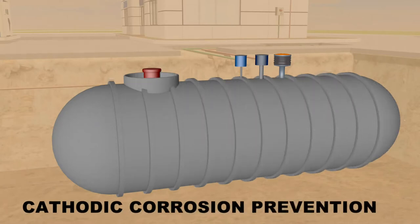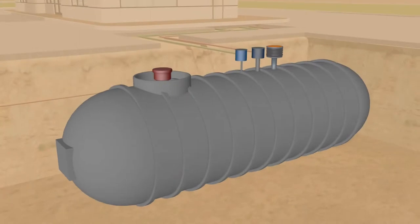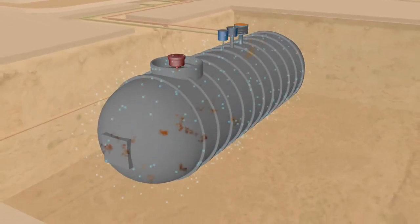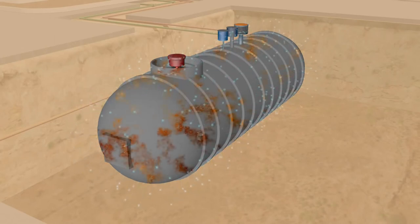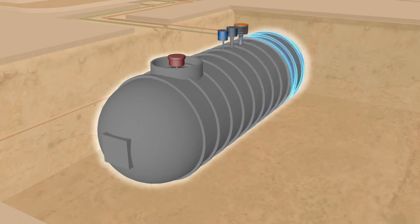When uncoated steel tanks are used, cathodic corrosion prevention systems are required. Corrosion, or rust, is caused when moisture in the soil draws off electrons from iron molecules in the steel. Applying a slight electrical current, basically a stream of free electrons, helps keep the iron molecules intact.